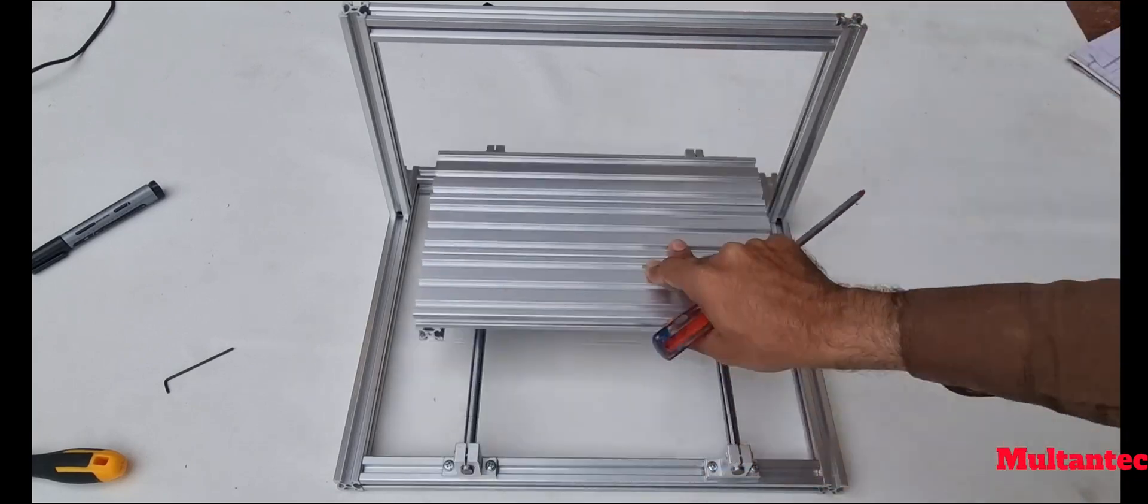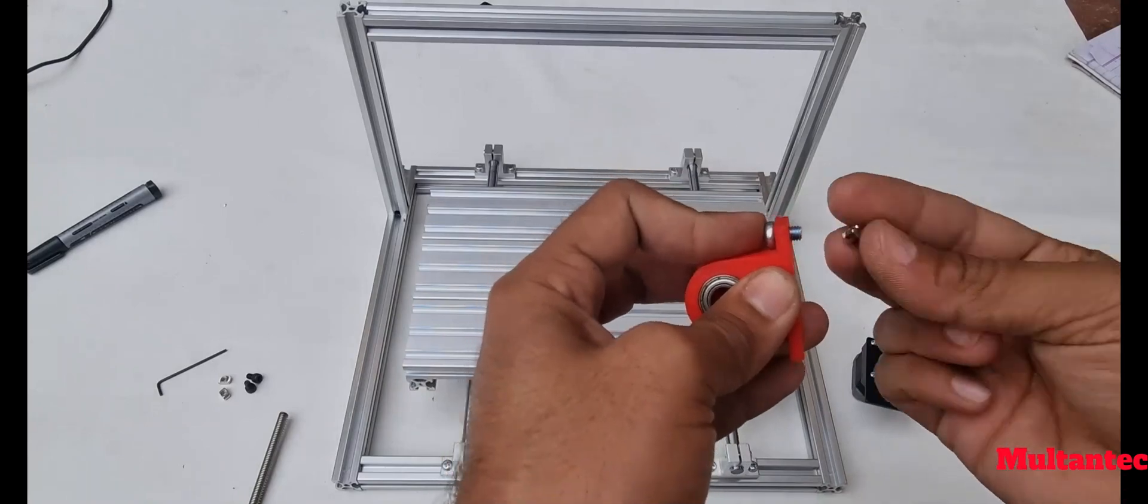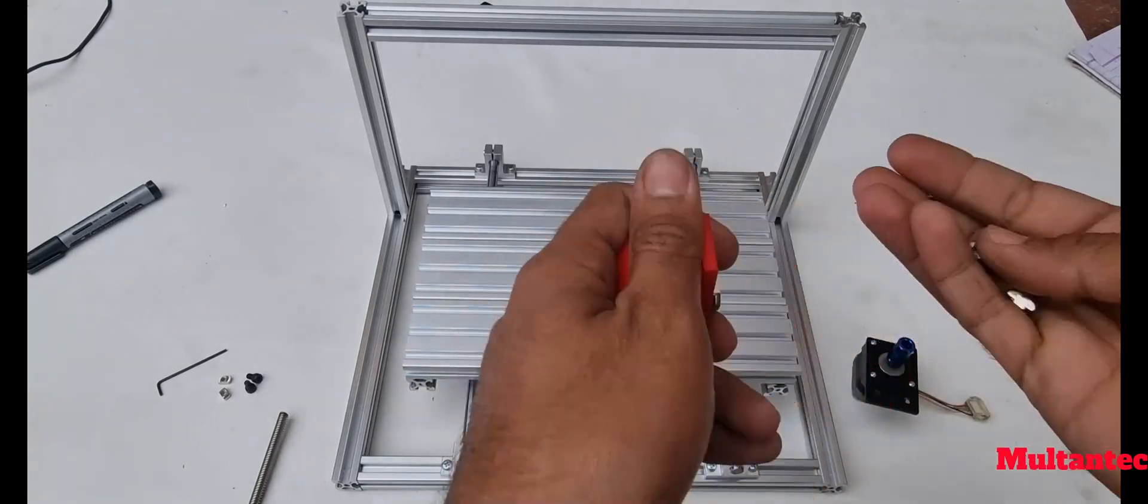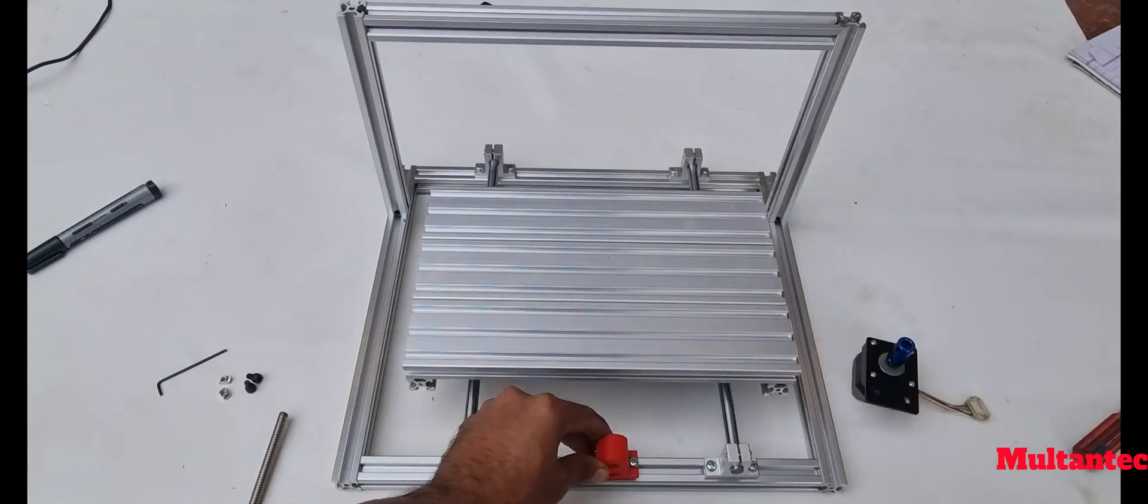Bed should slide smoothly from one end to the other. Place the Y-axis end bracket with the help of M5 10mm screw. Do not tighten.